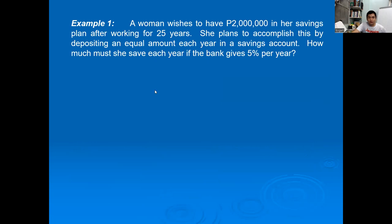Here's the summary of formulas. Example 1: A woman wishes to have 2 million in her savings plan after working 25 years. She plans to accomplish this by depositing an equal amount each year. How much must she deposit each year if the bank gives 5%? From this we can identify that equal amount each year will be your A.